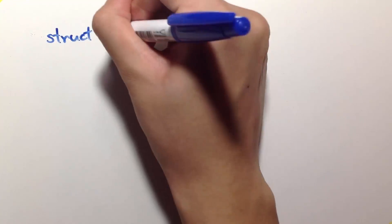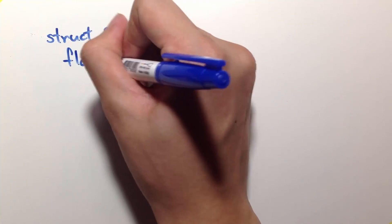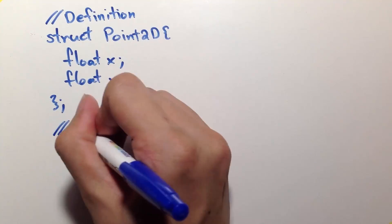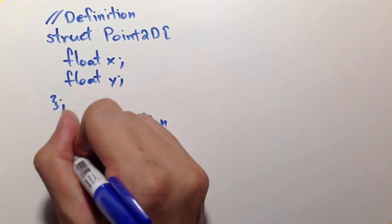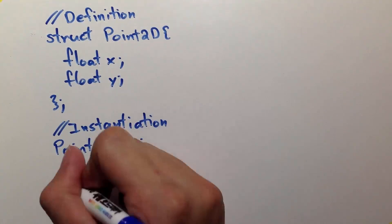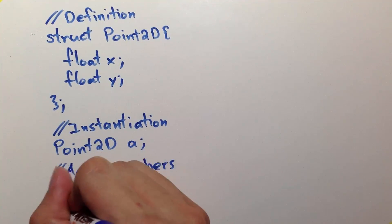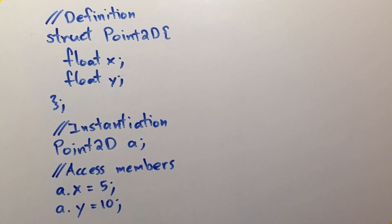Let's have an example. Let's say I want to create a structure called point2d containing two variables, x and y, both being float. To instantiate this structure, we do it as such, point2d followed by the variable name, a. So a is our variable. To access its members, you can access the x of a by a.x, and to access the y of a, we use a.y.